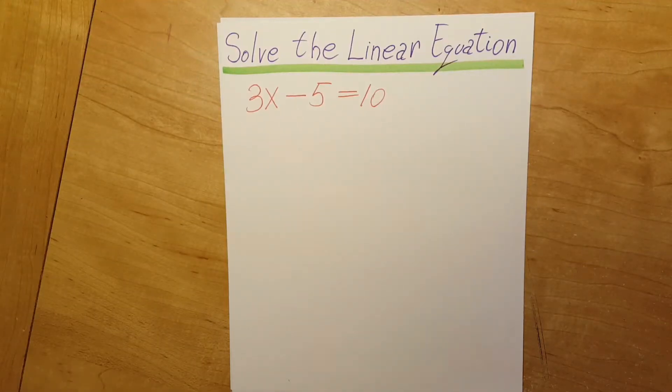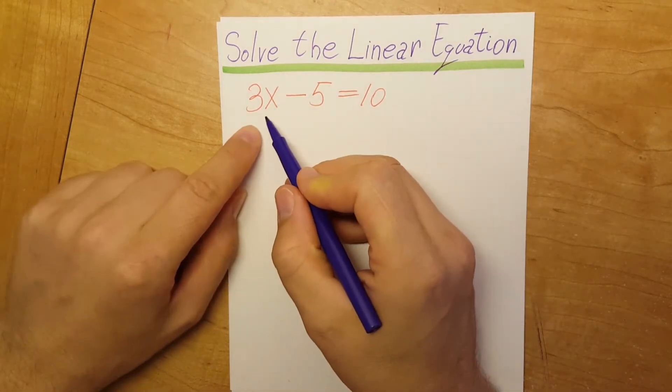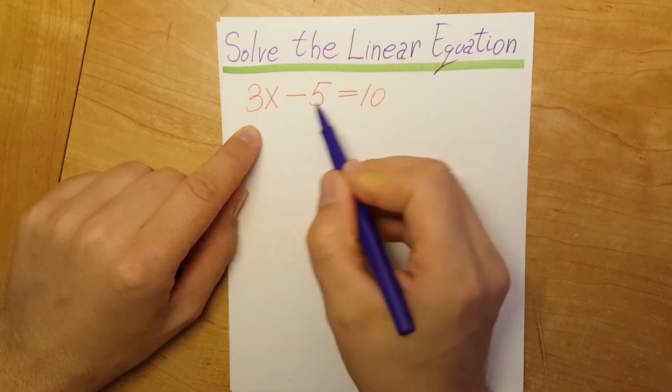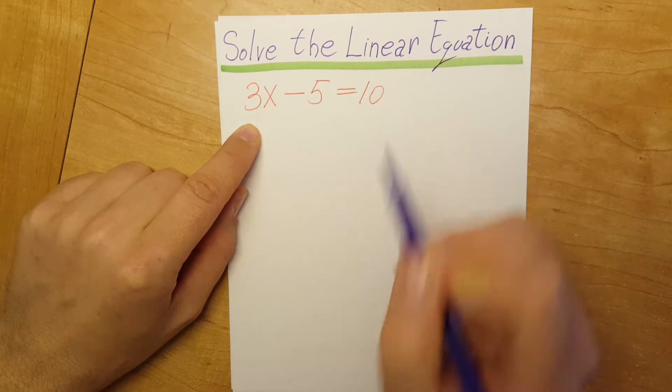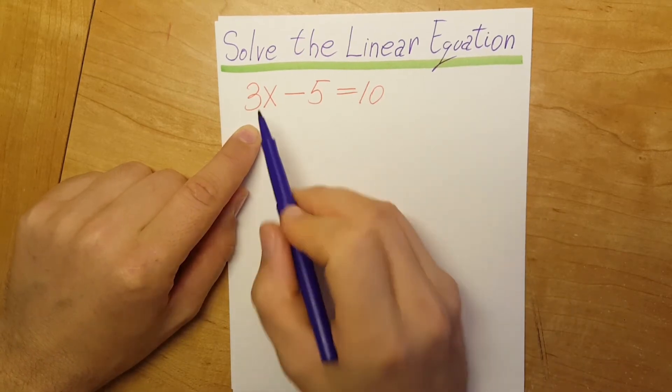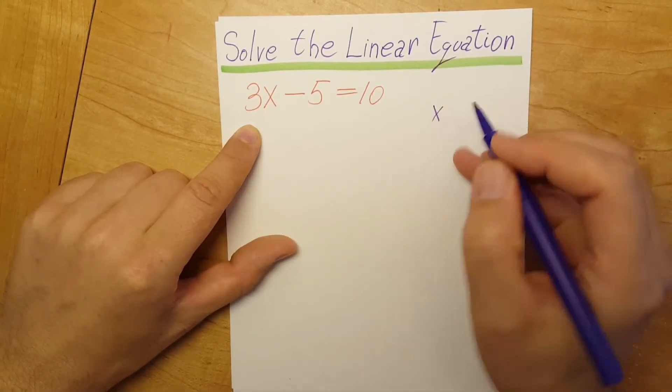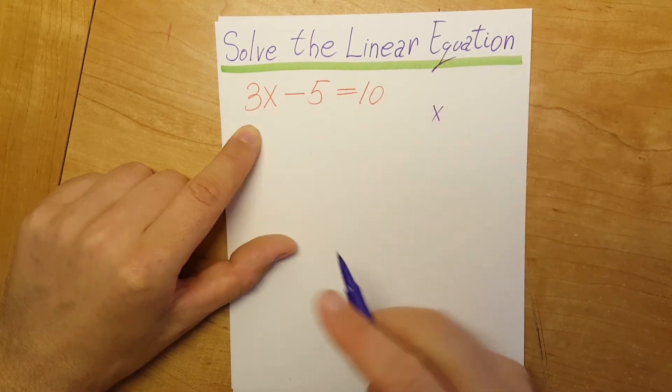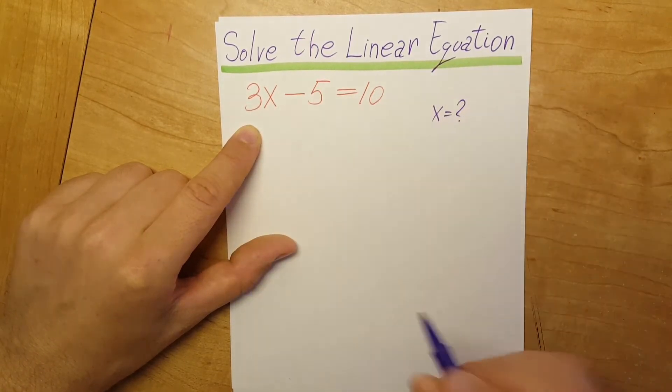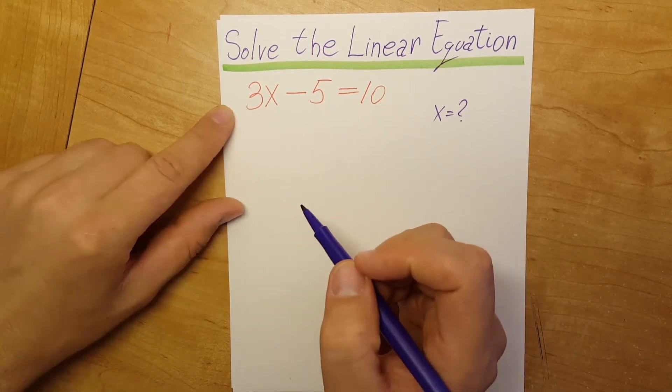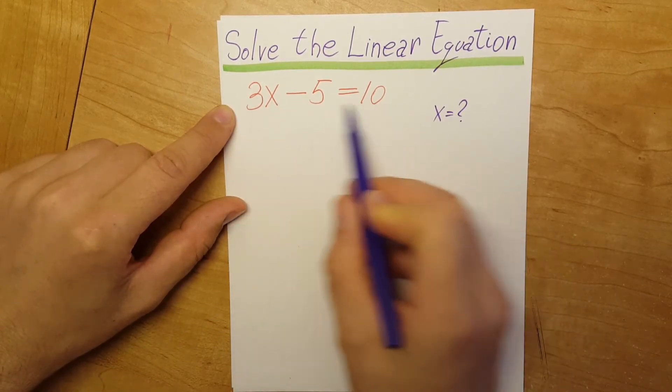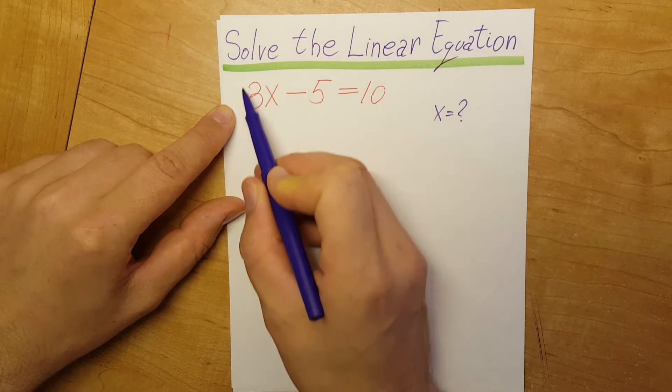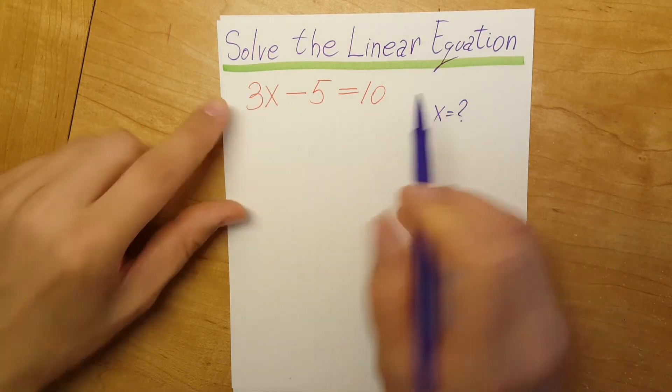Let's solve this linear equation. We have 3x minus 5 equals 10. We're going to solve for x, which means finding the value of x. First, we need to put the unknowns and the knowns on two different sides.